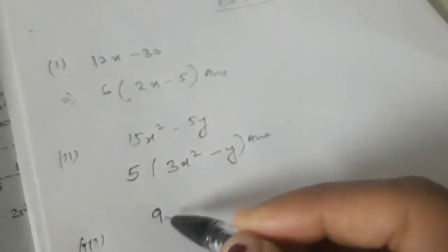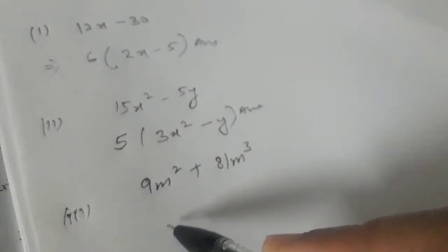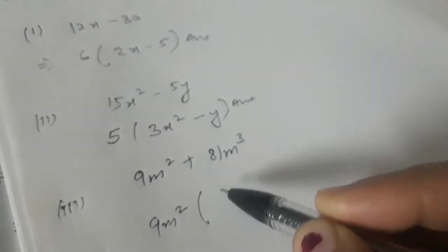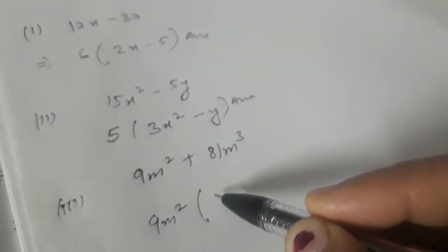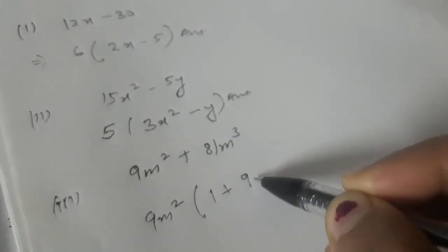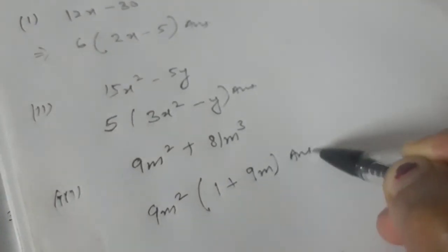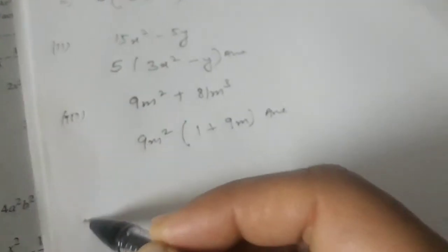The third part is 9m² plus 81m³. Here we can take 9m² as common, so we will be left within the bracket with 1 plus 9m, since 9 times 9m is 81m³. So 9m²(1 plus 9m) would be our answer.